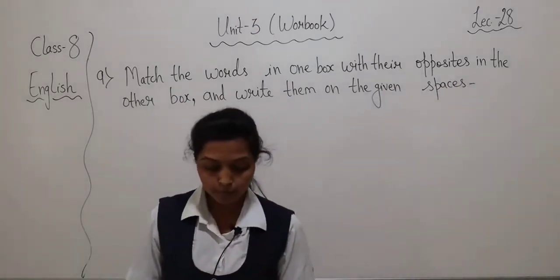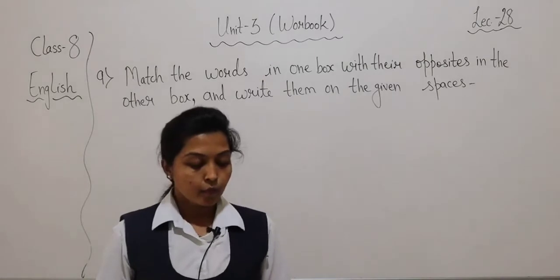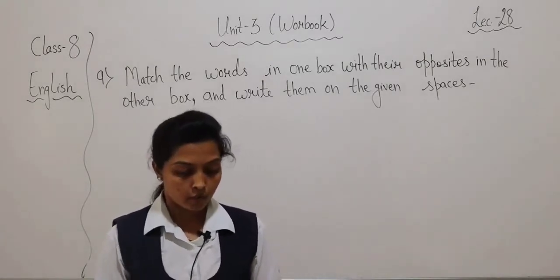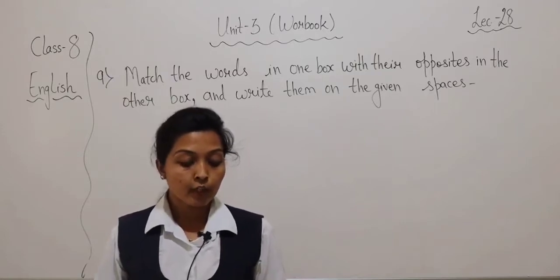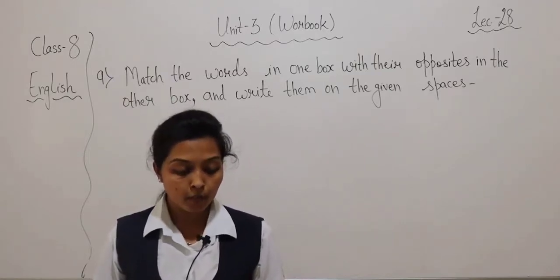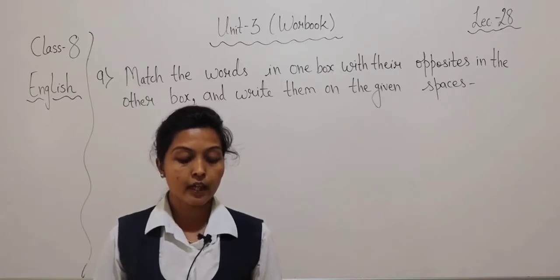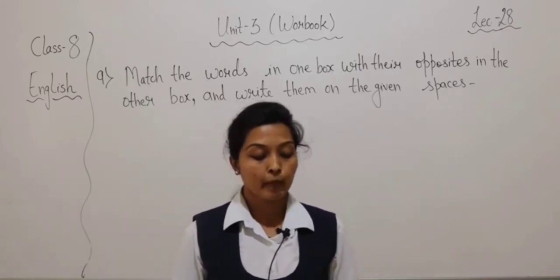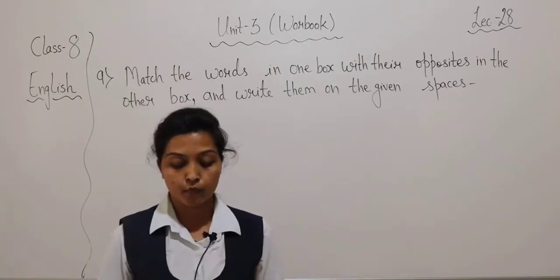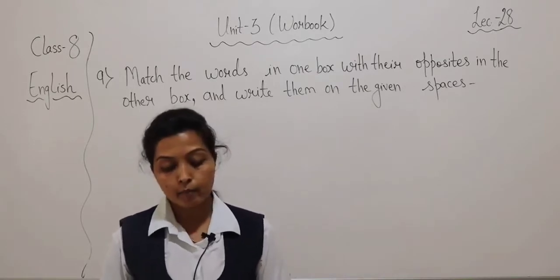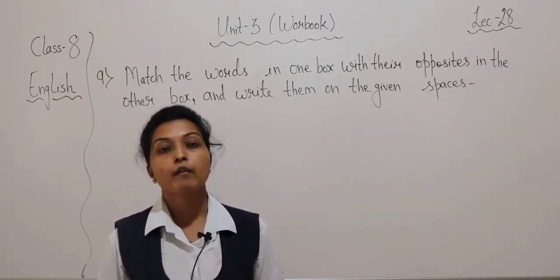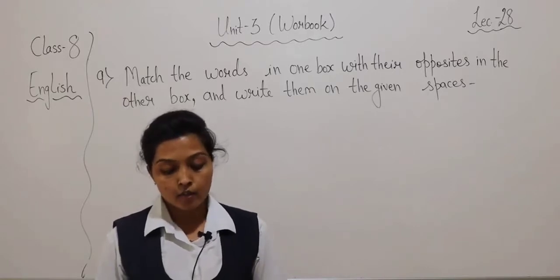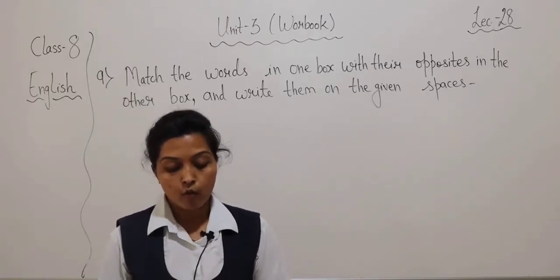First, I read out all the words in the two boxes. In the first box: win, brave, heavy, depth, east, rulers, accept, sunken, easy, public, import, different. Next: peace, capable, conquest, truth, profit, superior, remember.